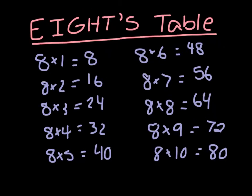Now let's go on to our eights table. It goes: 8 times 1 is equal to 8, 8 times 2 is equal to 16, 8 times 3 is equal to 24, 8 times 4 is equal to 32, 8 times 5 is equal to 40, 8 times 6 is equal to 48, 8 times 7 is equal to 56, 8 times 8 is equal to 64, 8 times 9 is equal to 72, and 8 times 10 is equal to 80.